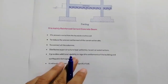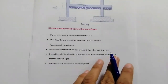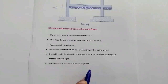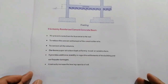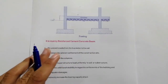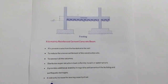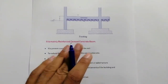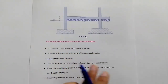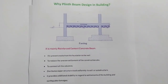The last purpose I'll mention — there are more purposes but these are the most important — is that plinth beam indirectly increases the bearing capacity of soil. If the bearing capacity of the soil is low, you must provide plinth beam. I have also recorded a previous video about raft foundation, where we design raft foundation when bearing capacity is very low. But if the bearing capacity of the site is somewhat low, you must provide plinth beam to indirectly increase the bearing capacity of that soil.